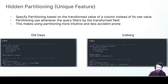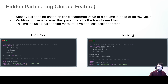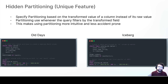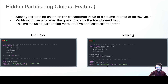With Iceberg, this is all much simpler. Instead, you apply a transform directly on the column, telling the metadata to partition not on the raw value but on the value after applying a built-in transform function. In this case, it turns the timestamp into a month — and there are also day, hour, and many other possible transforms. You don't need to create an additional column, so you're not storing extra data in the Parquet files. The transform value is stored in the metadata where it's used for query planning. This makes things easier for both the data engineer and the data analyst — the analyst doesn't even need to know how the table is partitioned; they just write an intuitive query and automatically get the benefit of the partitioning.